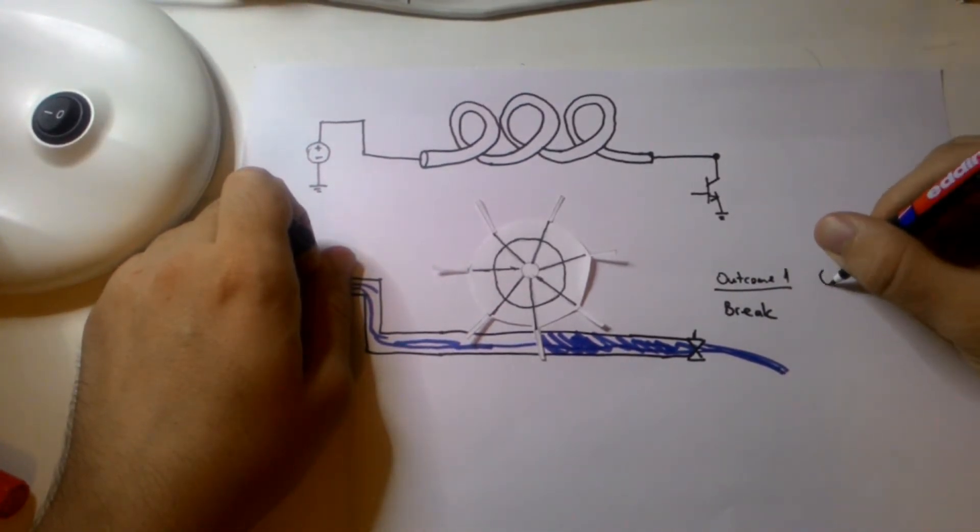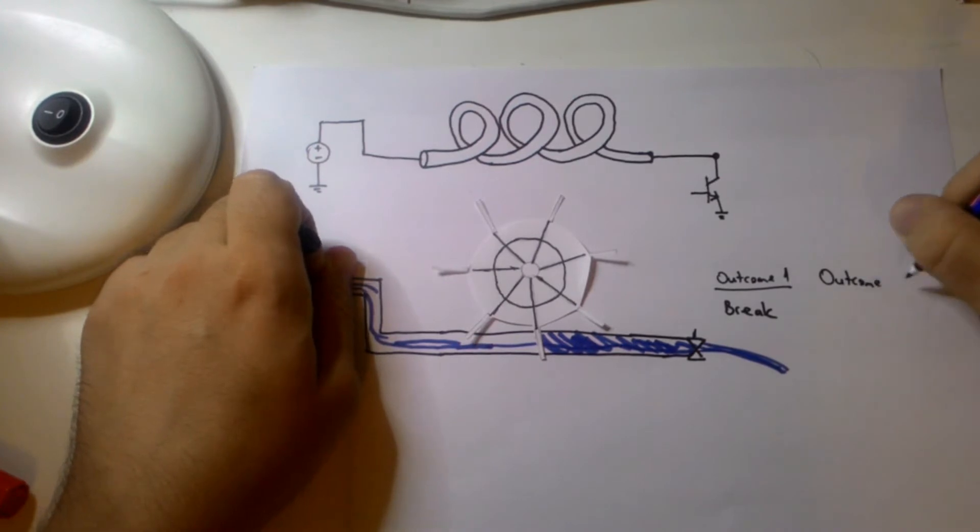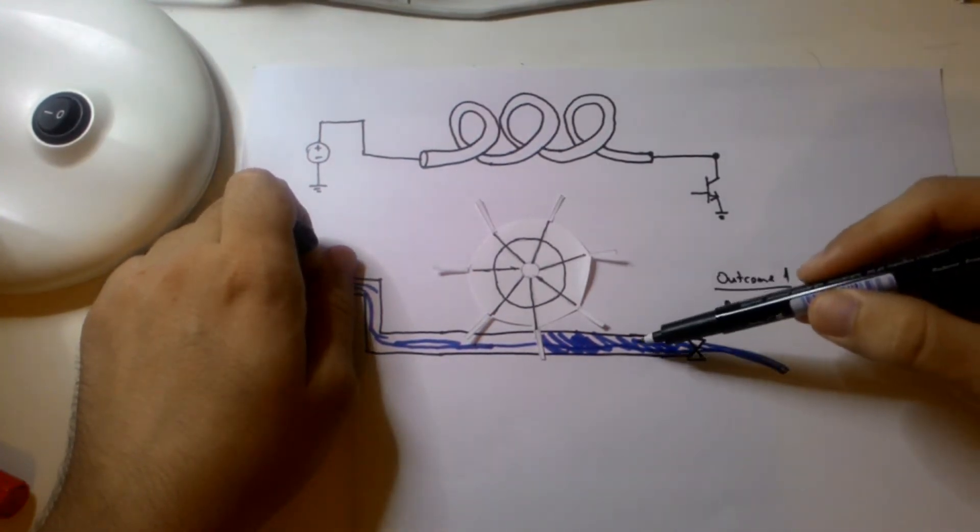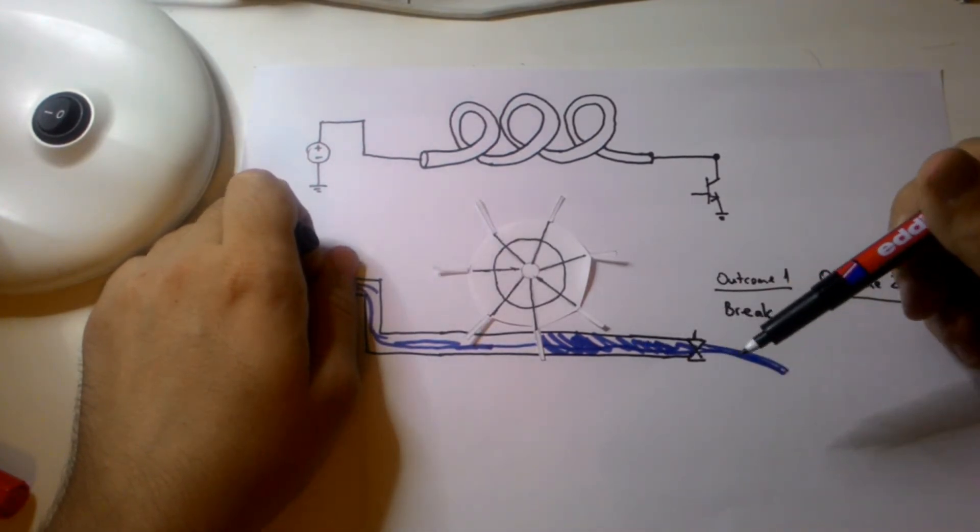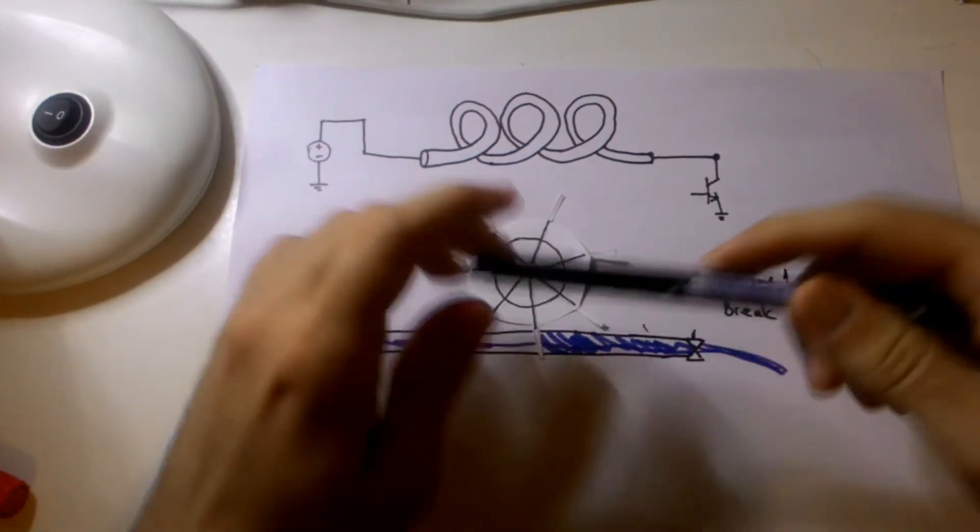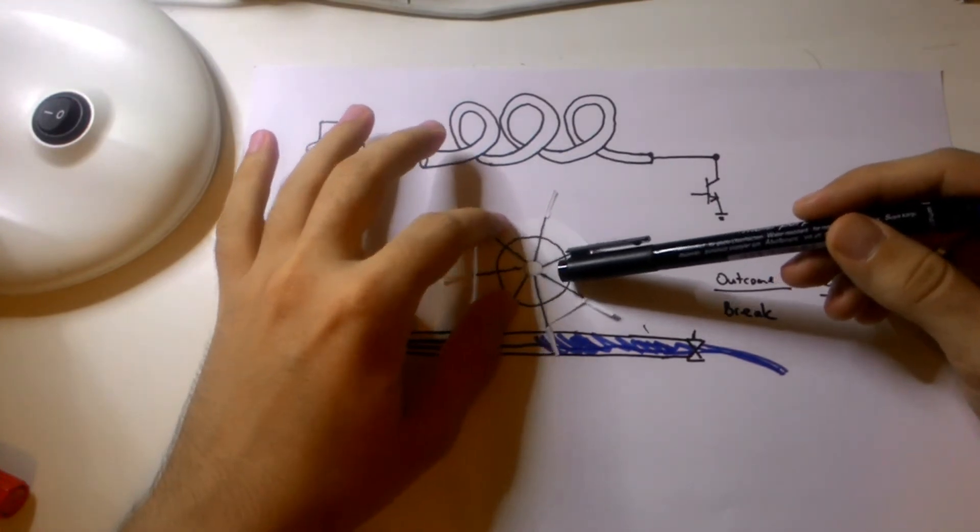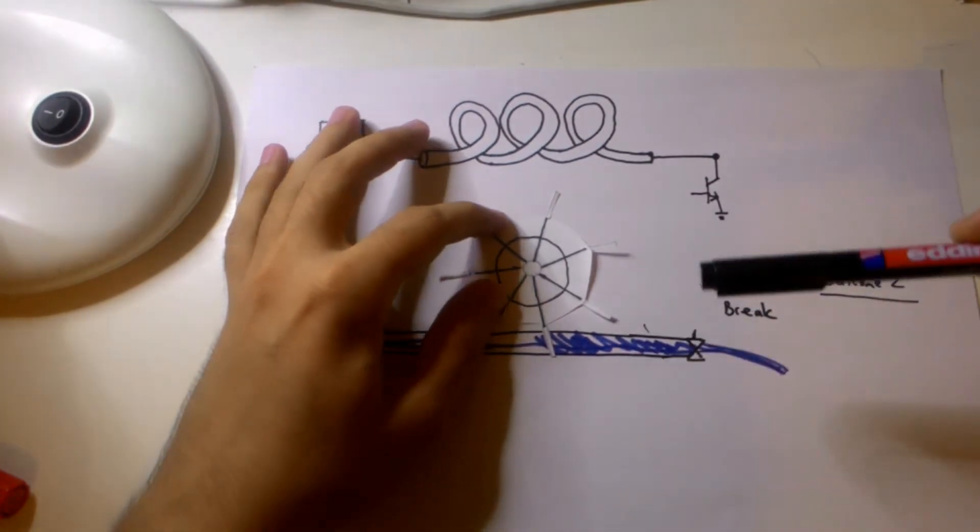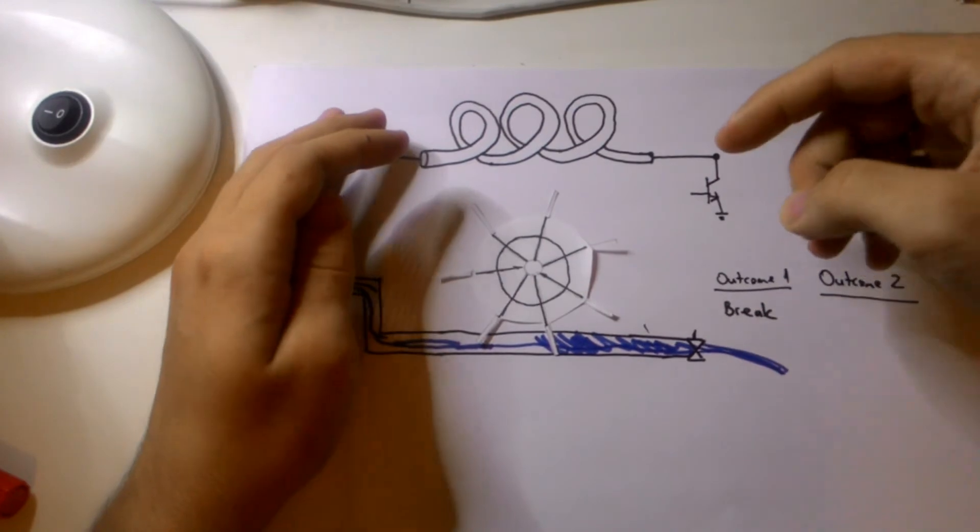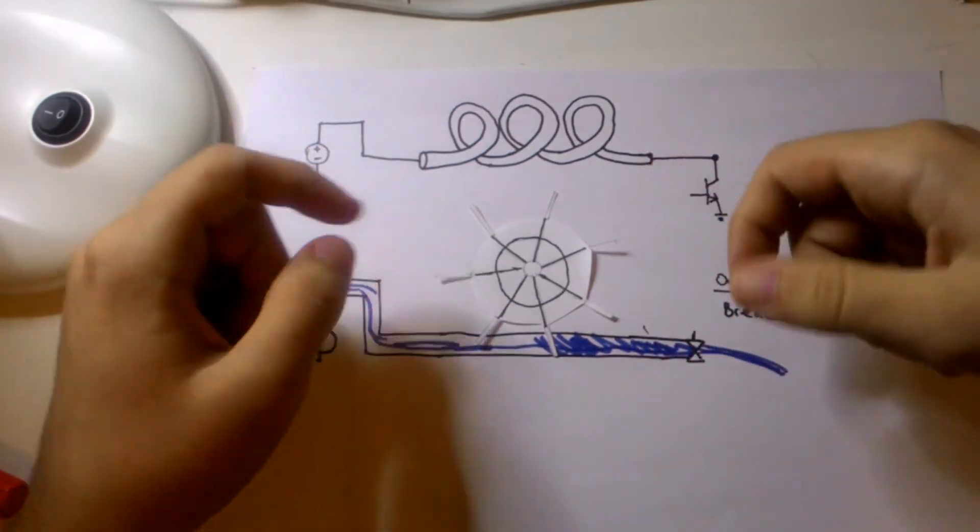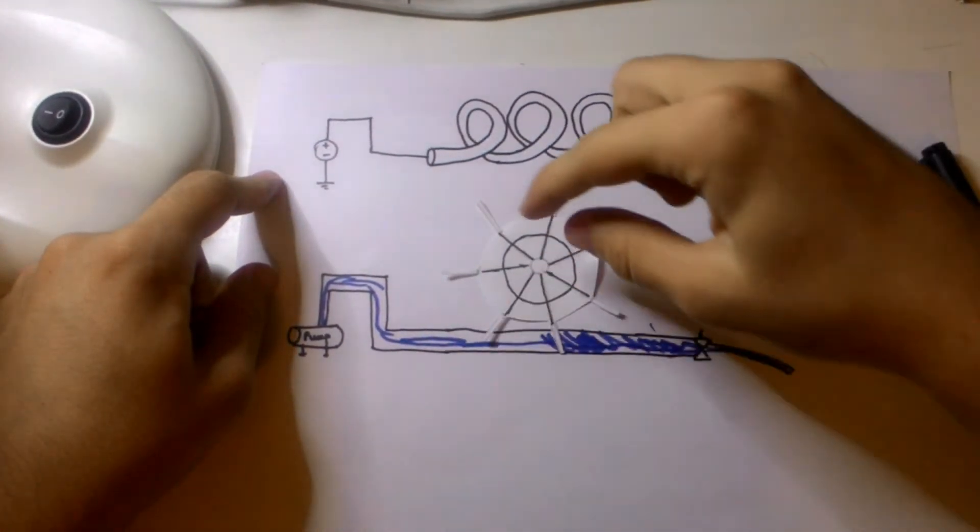And what may be the second outcome in this scenario? My valve may actually withstand the intense pressure here. So what happens if it withstands? If my water wheel has unloaded all of its energy to here and yet my valve withstands, the water will start to flow back in this direction because just like how current flows from high voltage to low voltage, the water will flow from high pressure to low pressure.